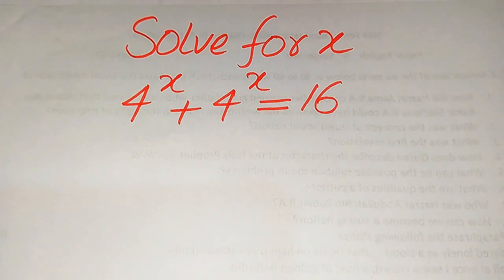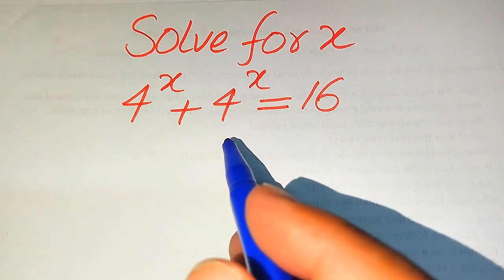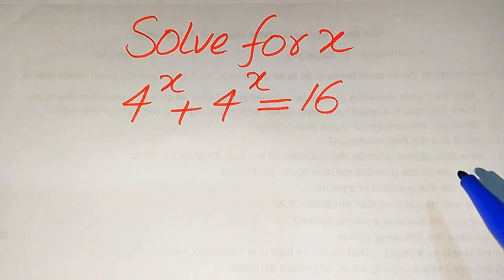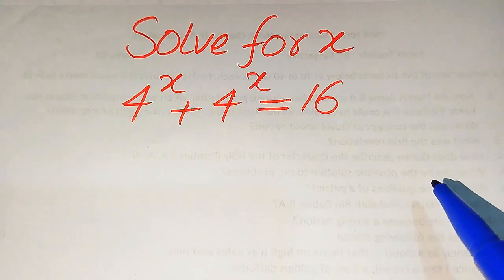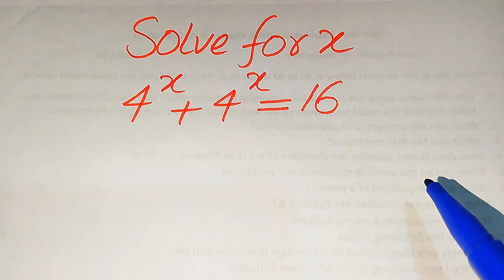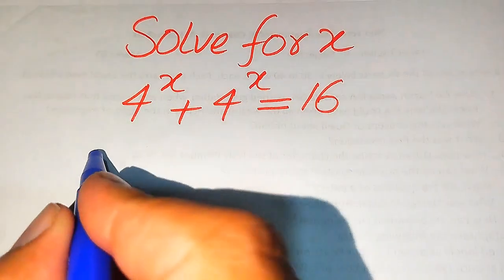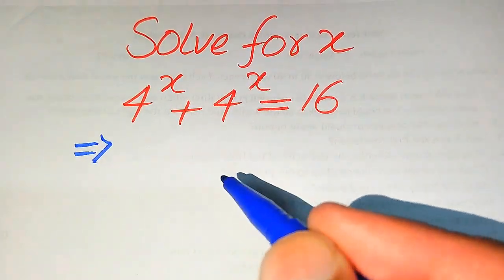Hello everyone. How to solve this problem for the values of x, if we have 4 to the power of x plus 4 to the power of x equals 16. We solve this problem for all the values of x. First we find all the roots of this equation, and at the last we will verify which of the roots are solutions and which are extraneous roots.